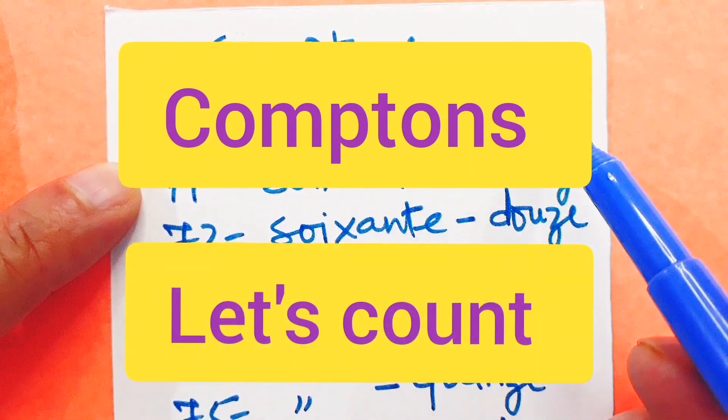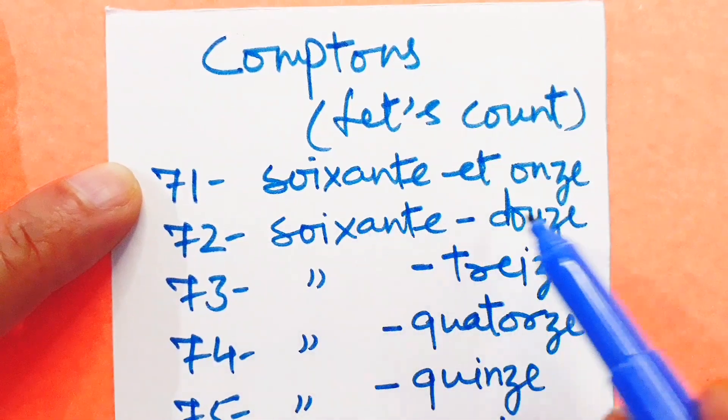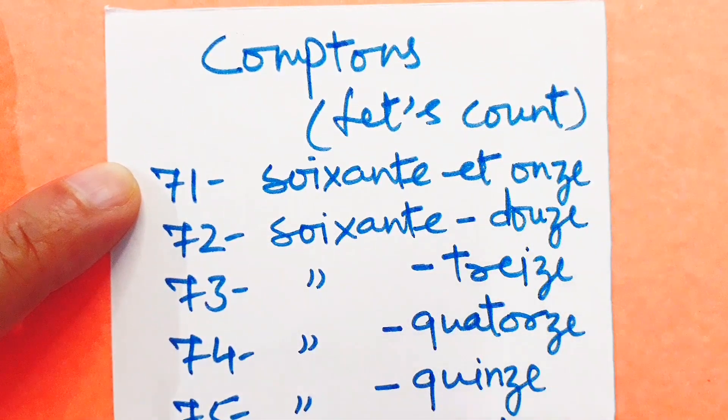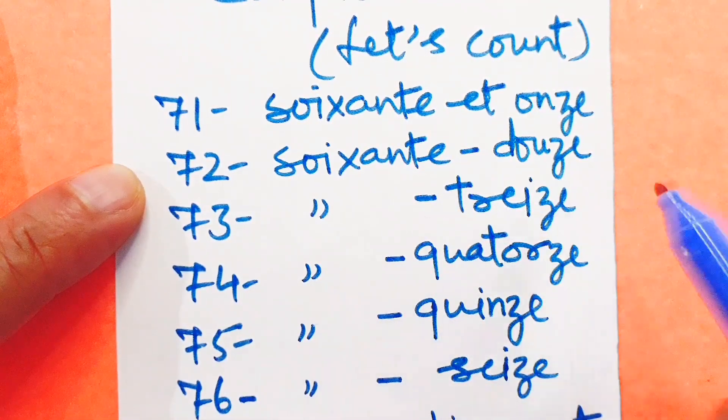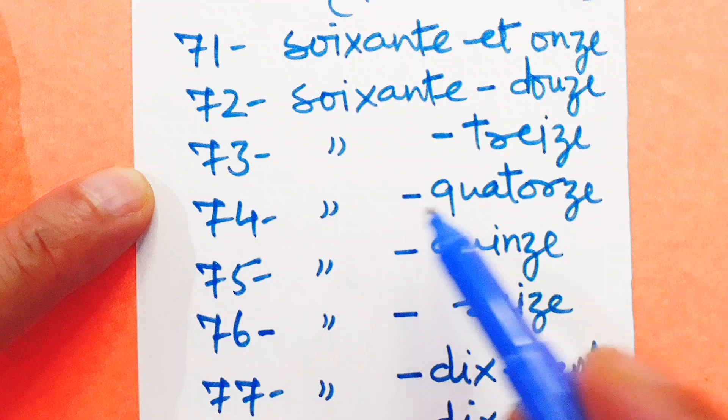Comptons. Let's count. 71: Soixante-onze. 72: Soixante-douze. 73: Soixante-treize.